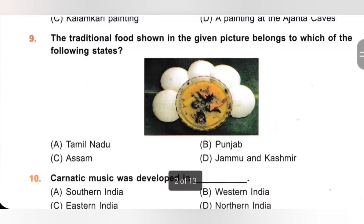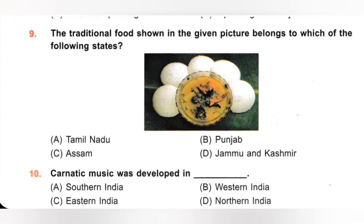9th. The traditional food shown in the given picture belongs to which of the following states? A. Tamil Nadu, B. Punjab, C. Assam, D. Jammu and Kashmir. The traditional food shown is Idli and Sambar. It is the traditional food of Tamil Nadu. Option A is the correct answer.